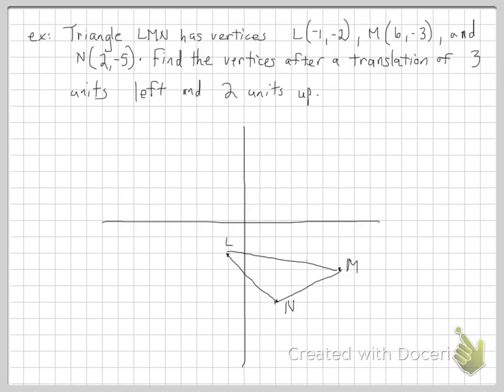Now this one says triangle L, M, N has vertices L, which is negative 1, negative 2. M is 6, negative 3. And N is 2, negative 5. Find the vertices after a translation of 3 units left and 2 units up.